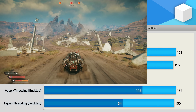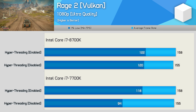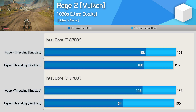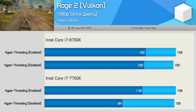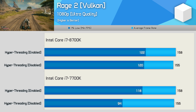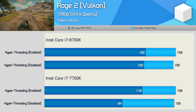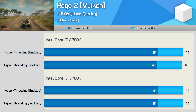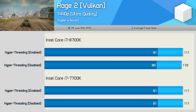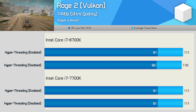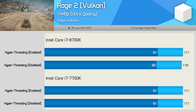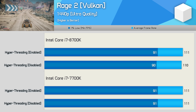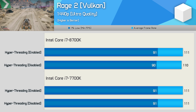In Rage 2, the 8700K saw almost no decline in performance with hyperthreading disabled. The 7700K showed a virtually unchanged average frame rate, but the 1% low performance drops by 20% — a significant reduction. However, once we increase the resolution to 1440p, that is enough to remove the CPU as the performance-limiting component for the 7700K, so disabling hyperthreading has no impact on performance at that resolution.